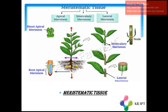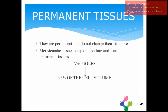Now we are going to learn about permanent tissues. Permanent tissues, as the name suggests, do not change their structure. Meristematic tissues keep on dividing and form permanent tissues. Their vacuoles are so large that they cover 95% of the cell's volume.